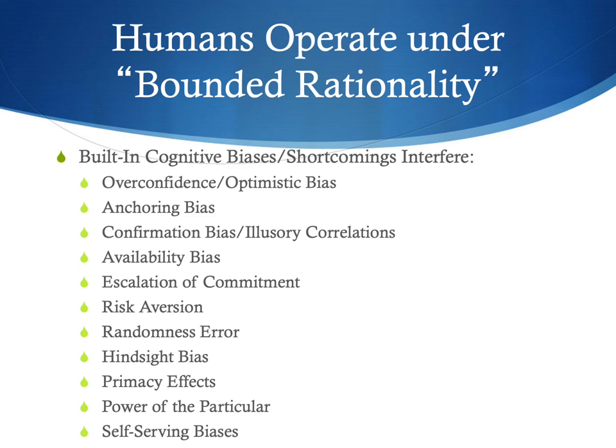This is further compromised by the cognitive biases that we bring into the decision-making situation. There are a wide variety of traps that we fall into when we're making judgments and decisions. A partial list of these can be seen on the slide. I'm not going to talk about them here, but your textbook goes into detail about quite a number of these, and I will want you to be familiar with those biases discussed in the textbook.